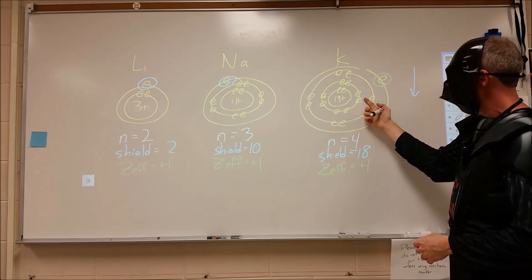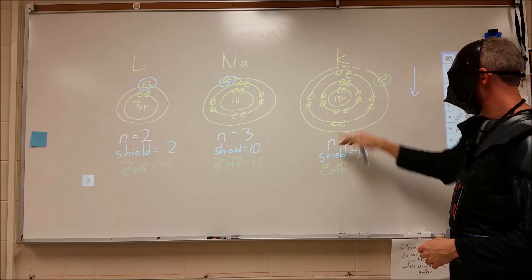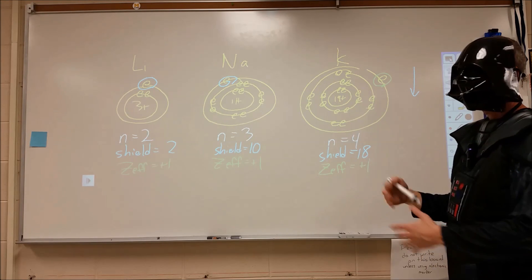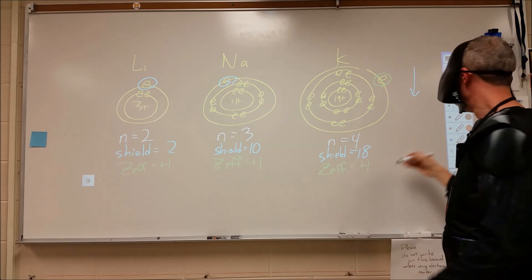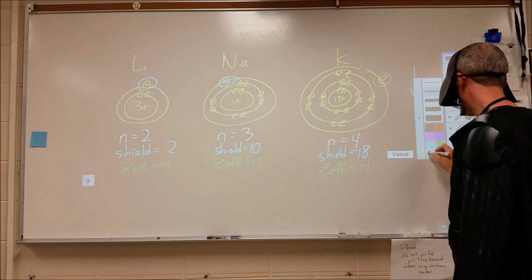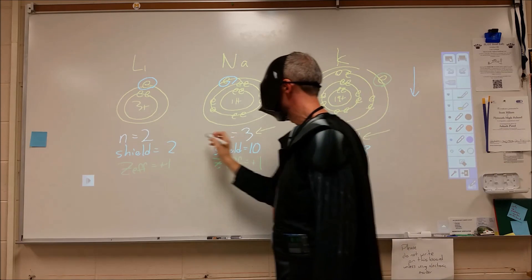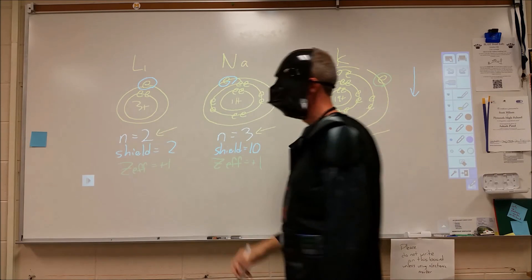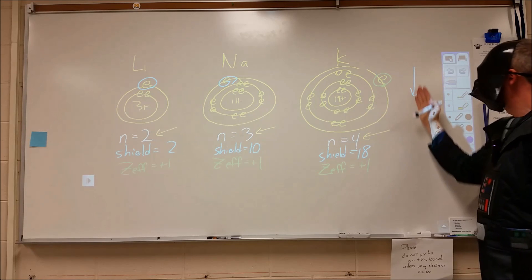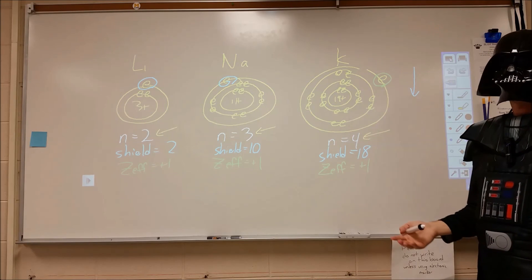Now, our shielding has gone up, but so has our nuclear charge, and so since our effective nuclear charge is mostly balanced throughout the three, our primary explanation for why this change occurs would be from the energy level increase. And that would be why, when you move down a group, you would expect the size of the atoms to increase.